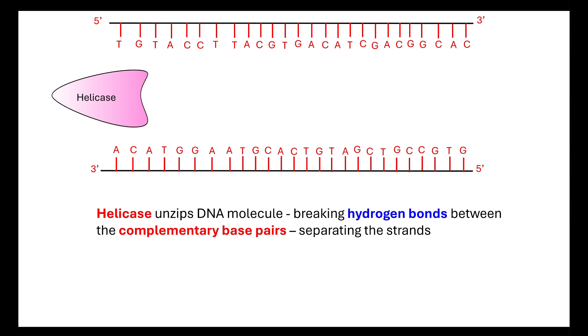Now remember, adenine and thymine always pair together and cytosine and guanine always pair together because they form hydrogen bonds because of this complementary base pairing. What we want to do is separate those two strands so that we can use them as template strands for building our new strand.